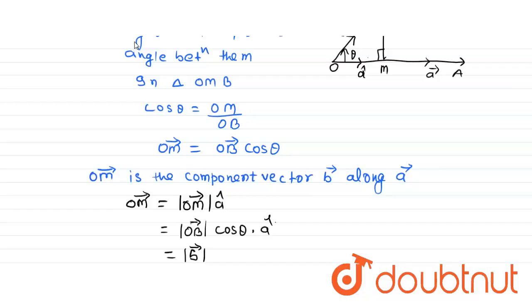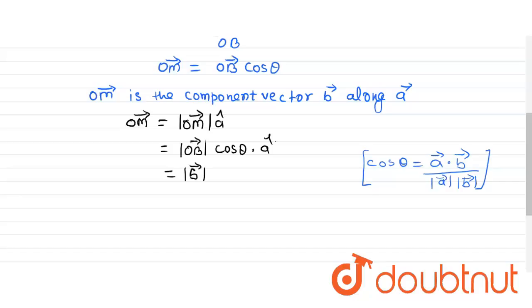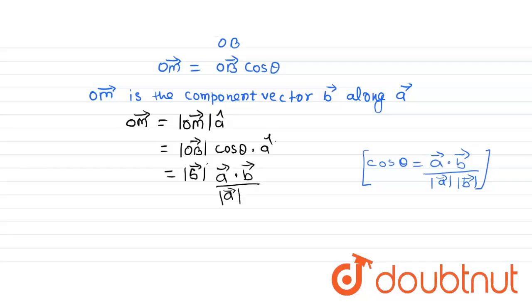Here we know that cos theta is equal to A vector dot B vector upon magnitude of A vector into magnitude of B vector. Using this result in our solution, we get: magnitude of B vector into A dot B vector upon magnitude of A vector into magnitude of B vector — the magnitude of B vector cancels — into A cap.